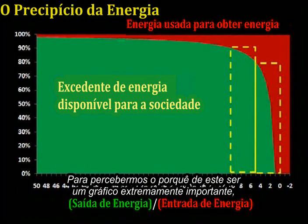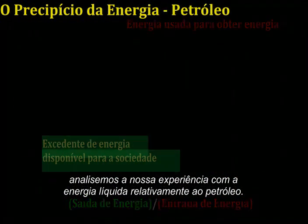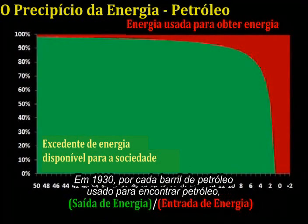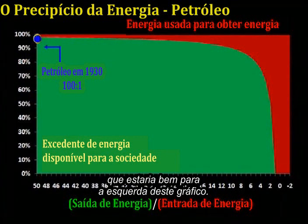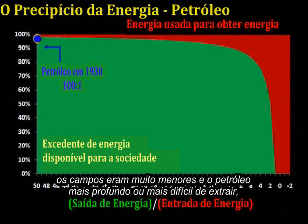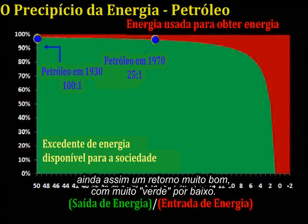To find out why this is an enormously important chart, let's look at our experience with net energy with respect to oil. In 1930, for every barrel of oil used to find oil, it is estimated that 100 were produced, giving us a reading of 100 to 1, which would be way off this chart to the left. By 1970, fields were a lot smaller and the oil often deeper or otherwise trickier to extract, and the net energy gain was now down to a value of 25 to 1.